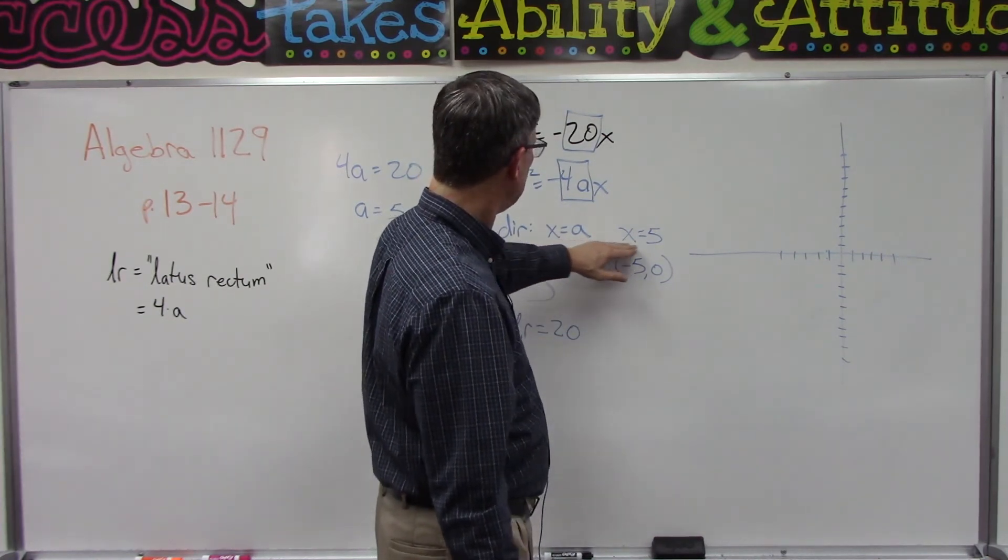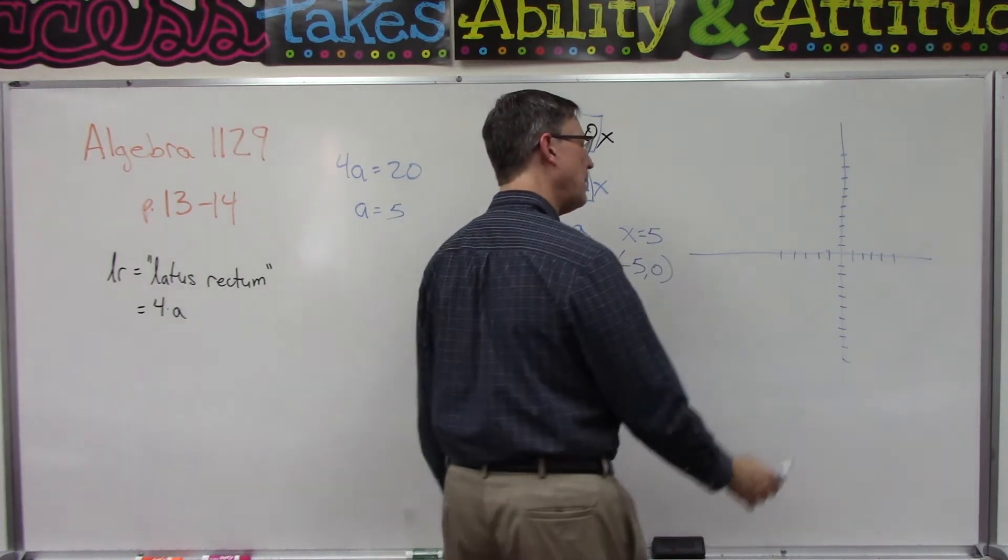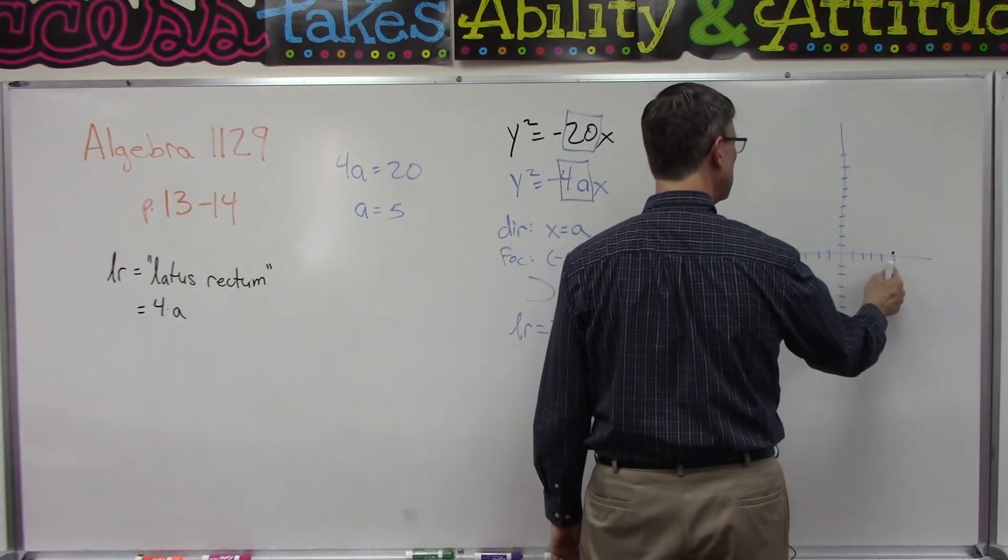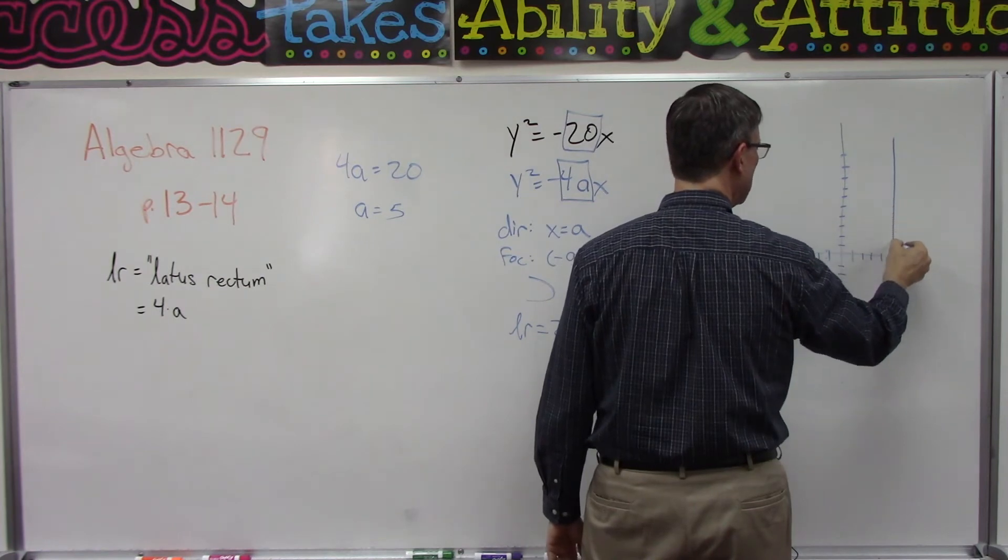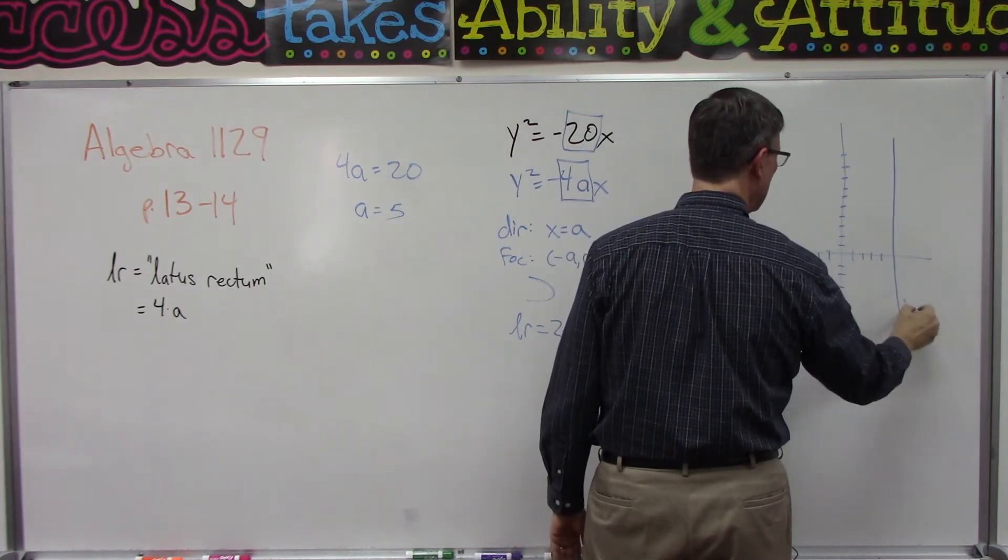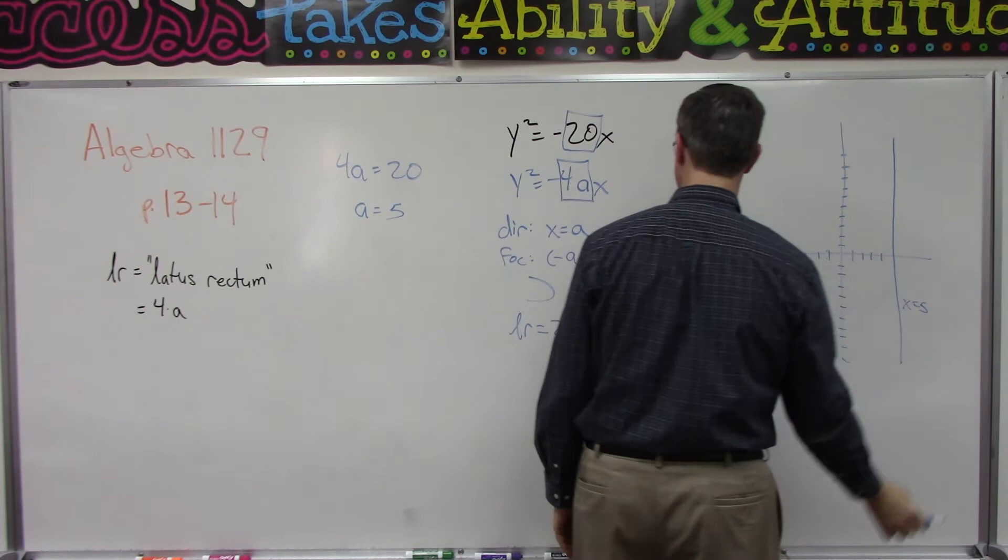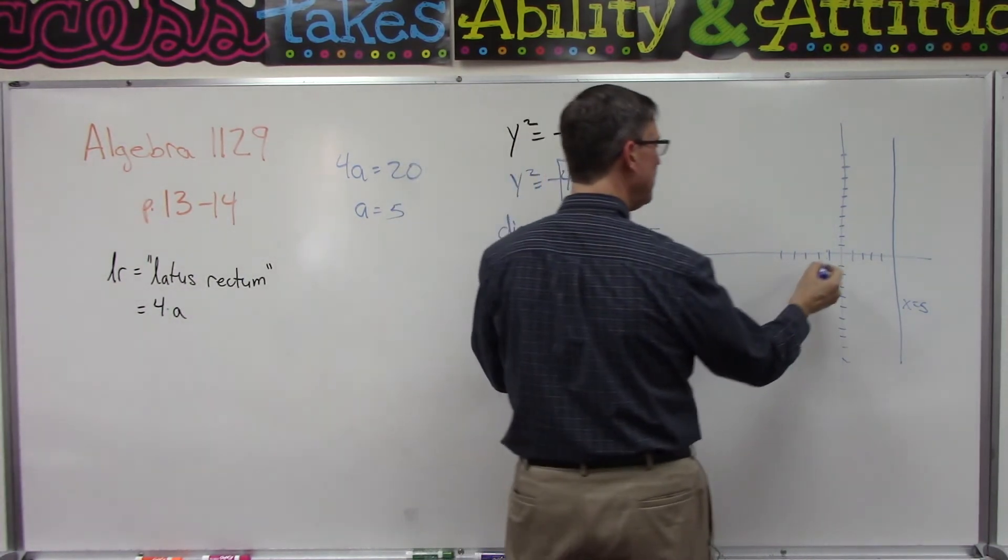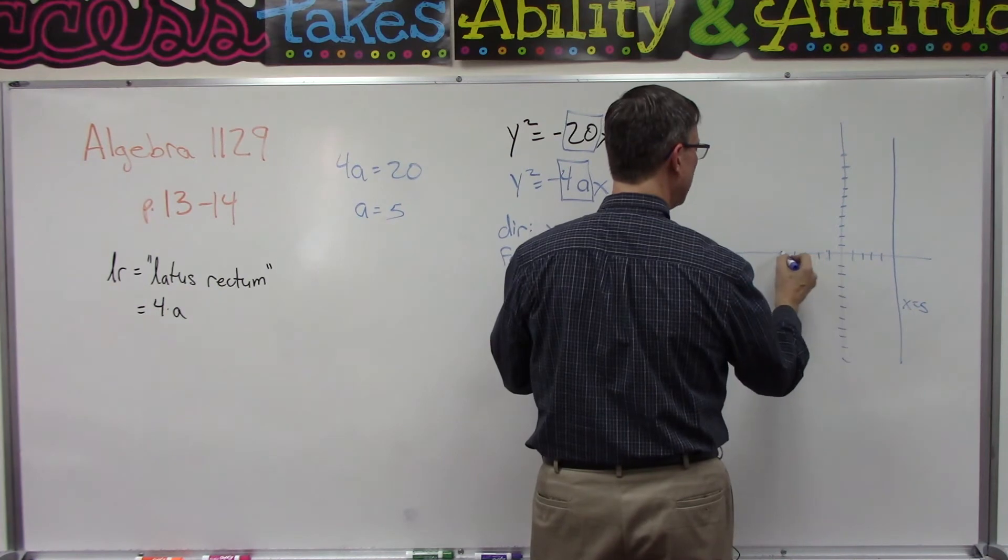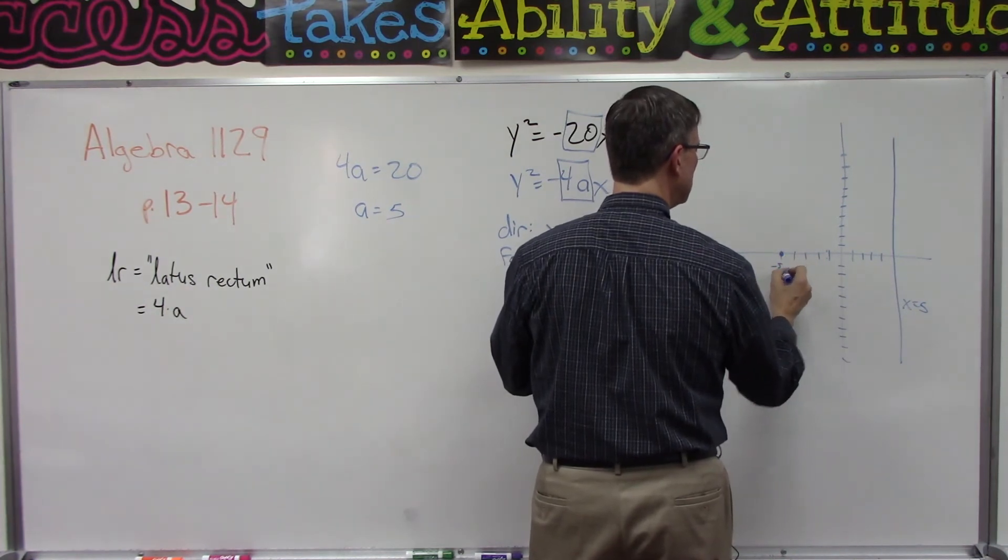The directrix x = 5 means it's going to cross the x-axis out here at positive 5, so we could draw a line here straight up and down—that's x = 5. The focal point is going to be (-5, 0), so right here at -5, put a dot here at (-5, 0).